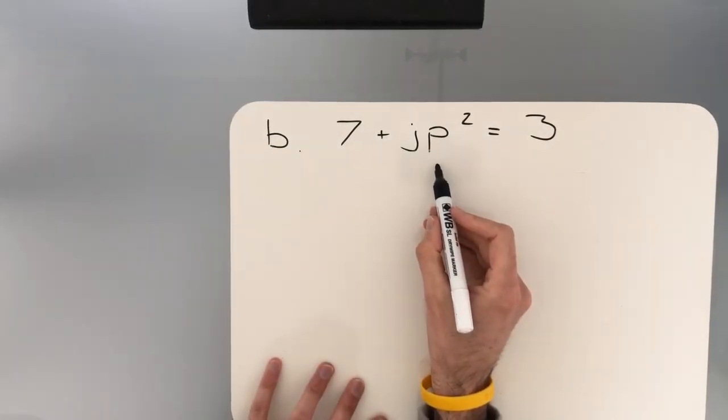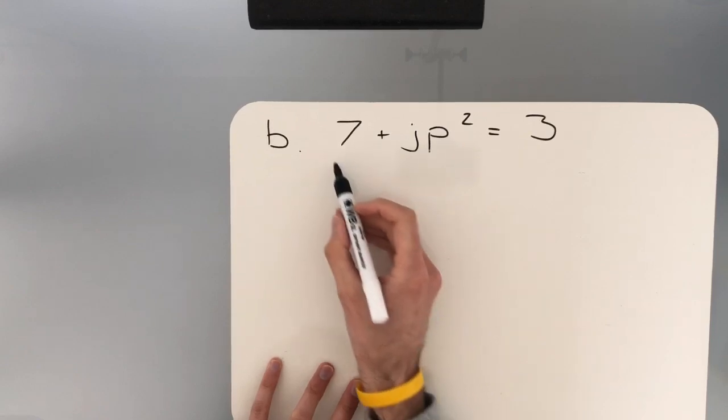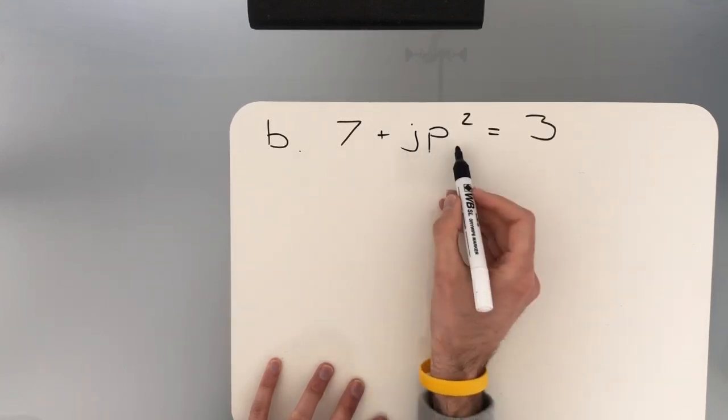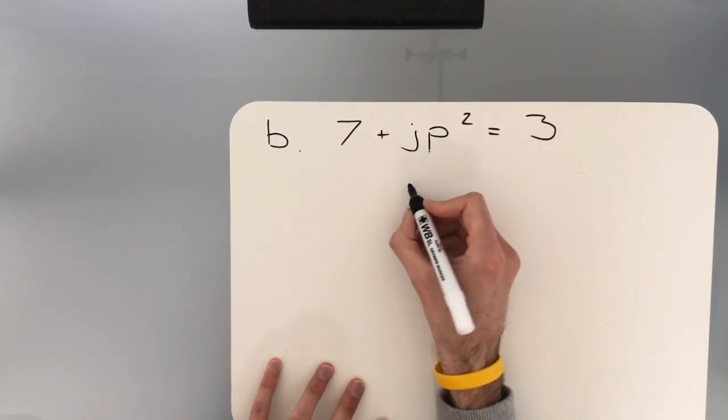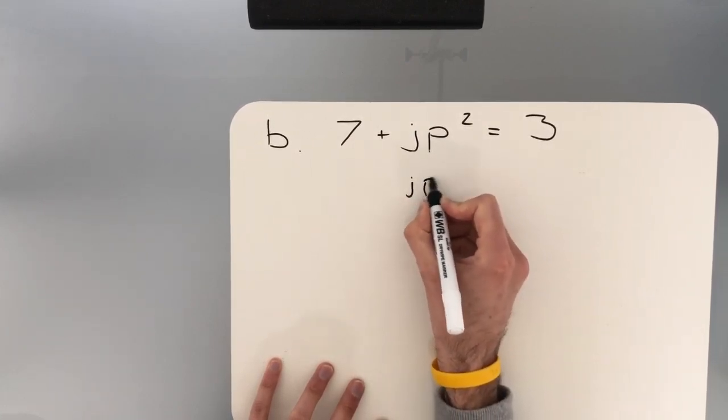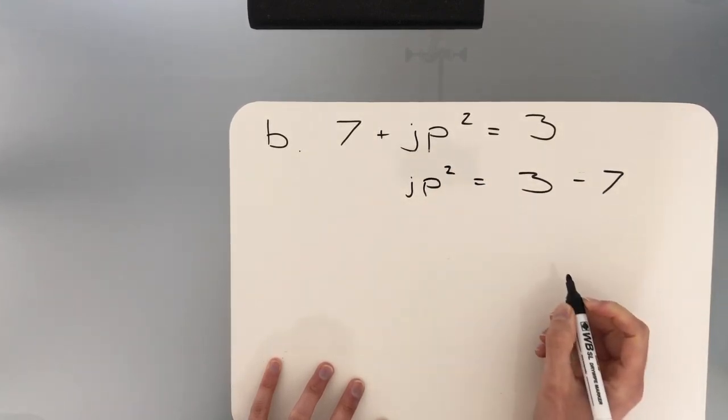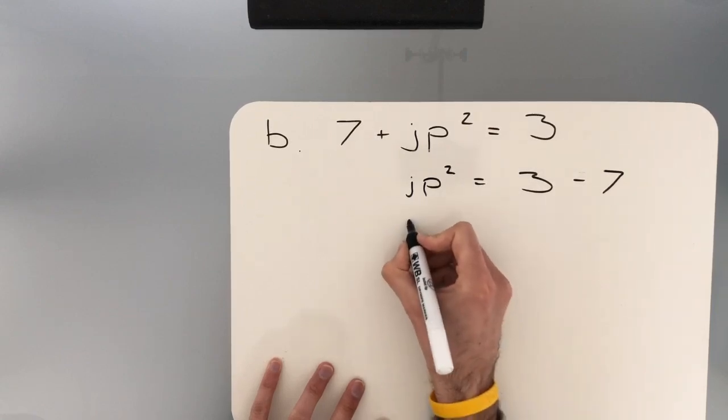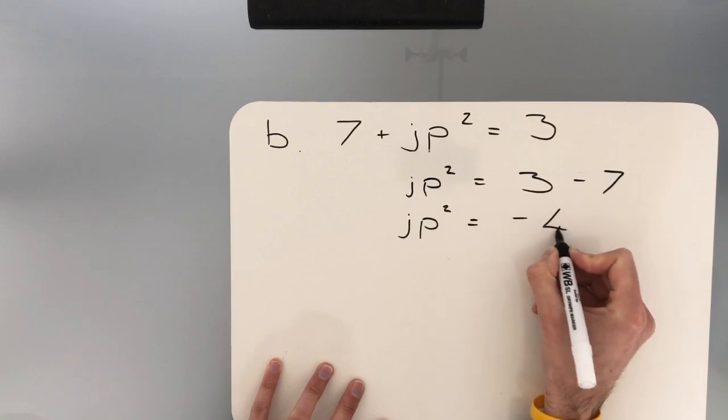Once again, we're looking to leave the letter P on its own. We're using BIDMAS in reverse. The first thing we want to do is deal with anything that's either adding or subtracting to it. You'll see here this 7 is adding on to it. So when we take over to the opposite side, we're going to do the opposite operation. So we have JP squared is equal to 3 subtract 7. Now, where possible, simplify down. So JP squared is equal to negative 4.